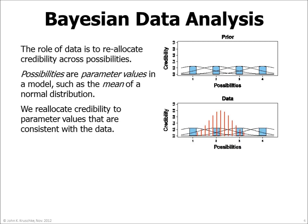Then we collect some data, which are denoted by the red histogram here. Notice that the data appear to be most consistent with the second mean, somewhat consistent with the third mean, and only slightly consistent with the other means.